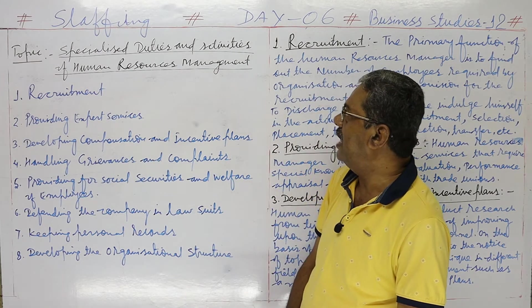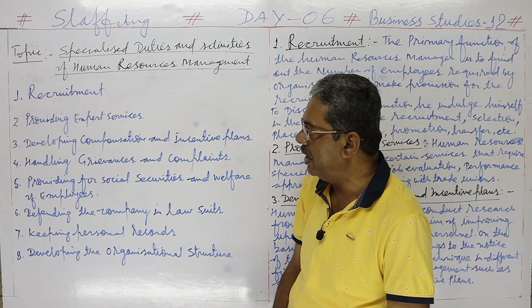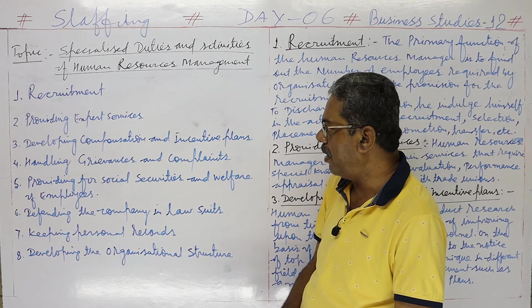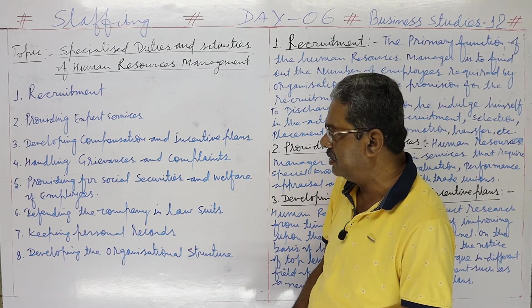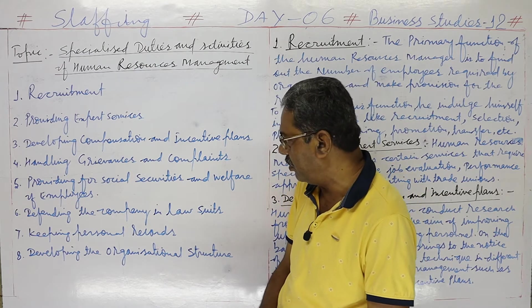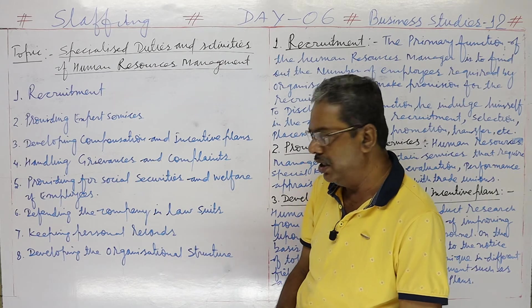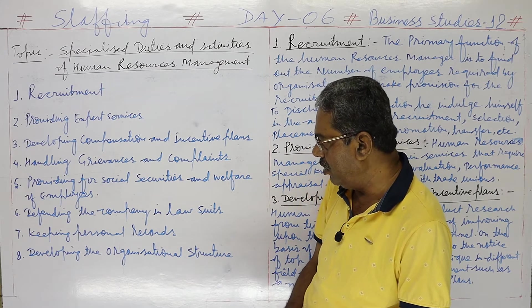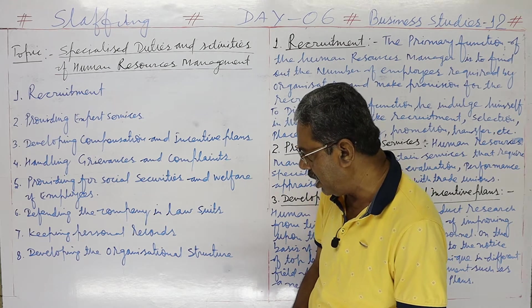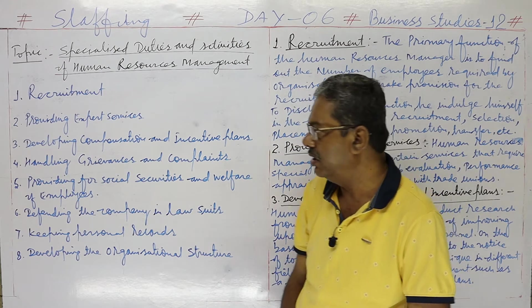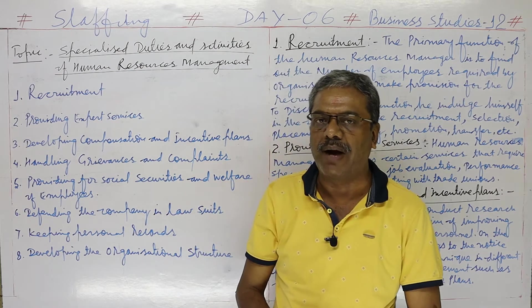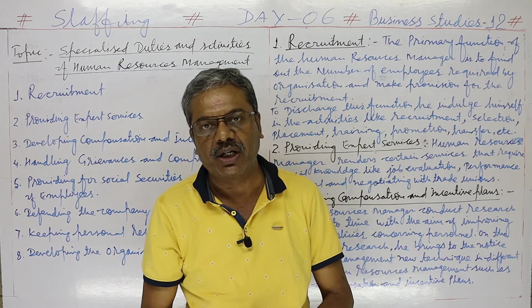The special duties and activities are: recruitment, providing expert services, developing compensation and incentive plans, handling grievances and complaints, providing for social security and welfare of employees, defending the company in lawsuits, keeping personal records, and developing the organization structure. These are the eight duties performed by Human Resources Management.